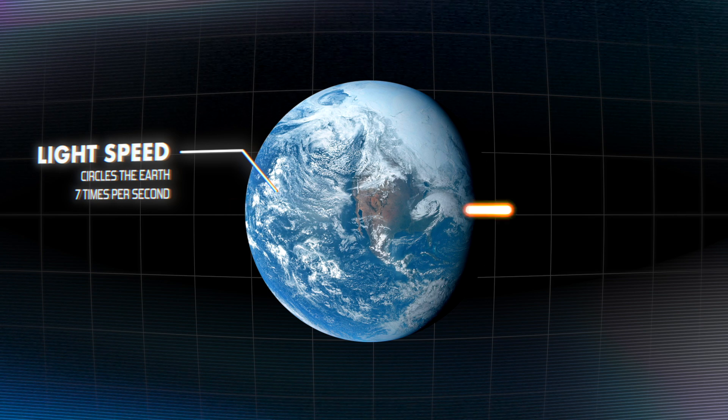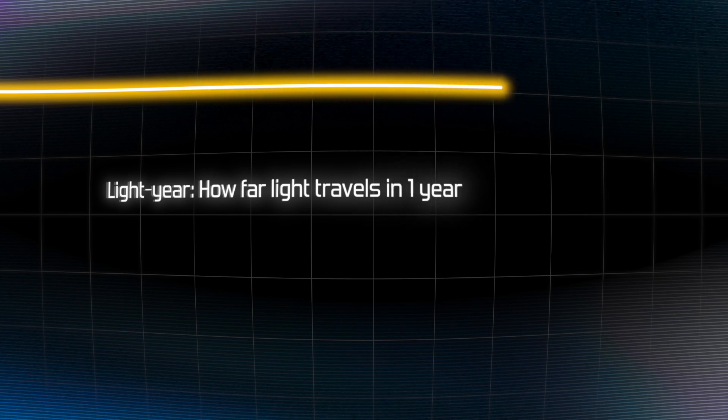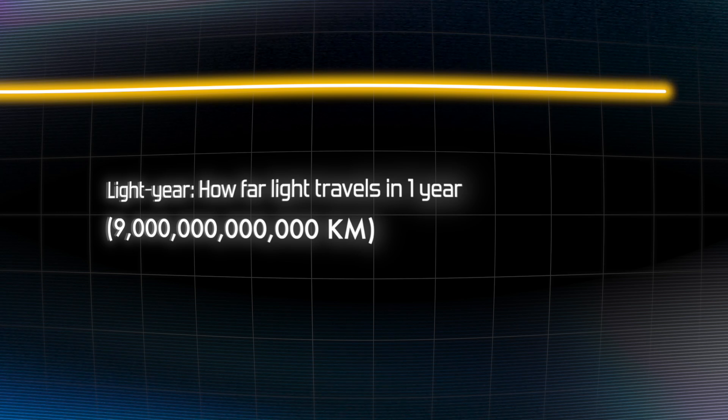So light moves incredibly fast, so fast that it can go around the Earth over seven times in just one single second. A light year is how far light can travel in one year, and as you might suspect, it's incredibly far, about 9 trillion kilometers.